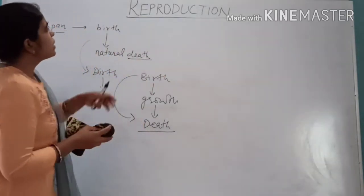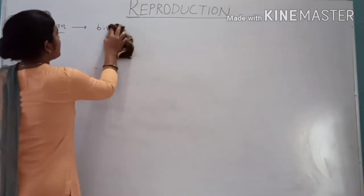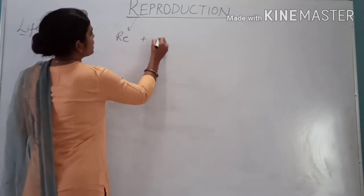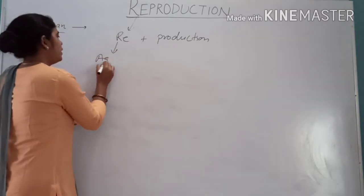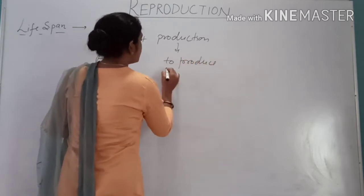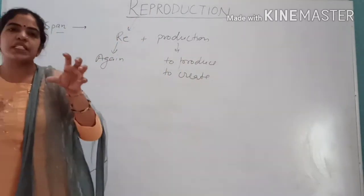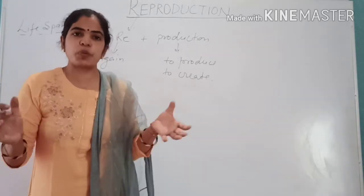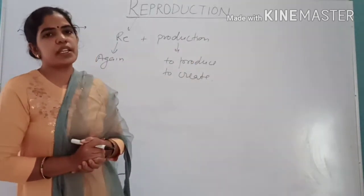The term reproduction is made up of two words: 're' and 'production'. 'Re' means again, and 'production' means to produce or to create. That means reproduction is a biological process in which an organism produces young ones or offspring of its own type.